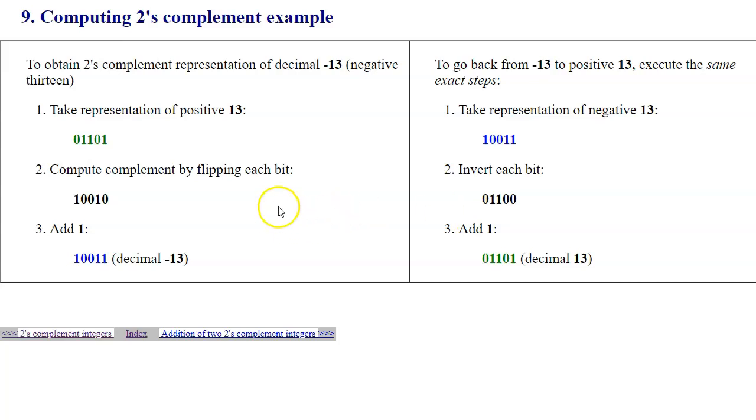Also, important to note that it's very easy to determine whether a two's complement value is positive or negative. You just simply look at the leftmost bit, and if it's 1, it's negative. If it's 0, it's positive. The leftmost bit is considered to be the sign bit, indicating the sign of the number.